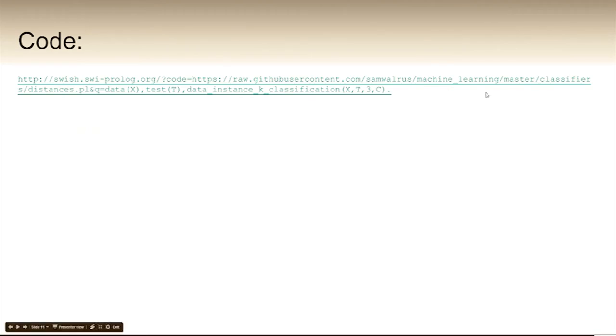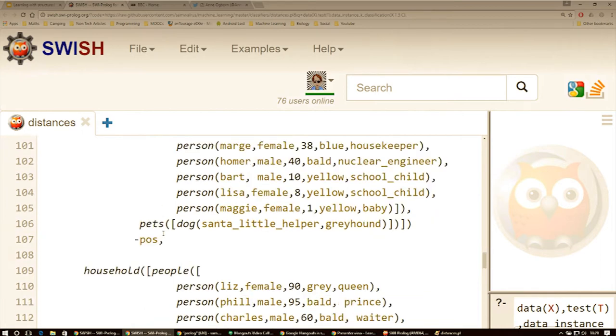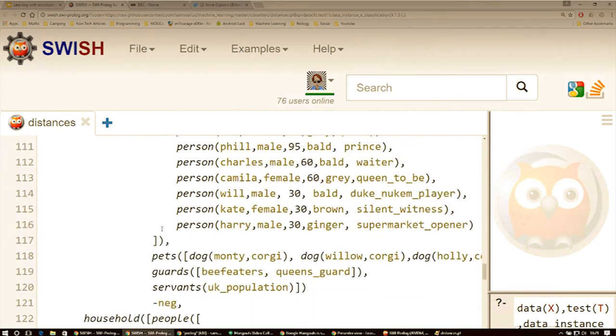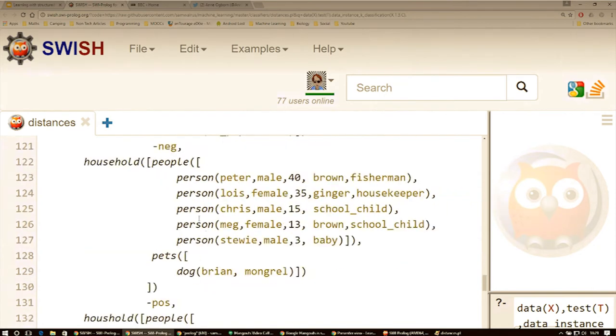Okay, so now we're going to have a look at some code. Okay, so here's our data and we've just got a predicate data x and that's going to be a list of our examples. So here we've got the Simpsons family as a positive example. Then we've got the royal family, which is a negative example. Then we've got the family from Family Guy, which is a positive example. Then we've got the Flintstones, the Lannisters from Game of Thrones, and we've got the Skywalker family and the Smith family from Rick and Morty.